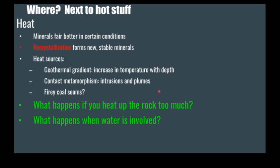Minerals, depending on the mineral, do much better in certain conditions than others. If you apply heat to those minerals, what will happen is the minerals might want to form new, more stable minerals that can handle those kind of heat conditions. This heat can come from the geothermal gradient, which is an increase in temperature with depth, common all over our planet. As you go down deep enough under the ground into the crust, you can get pretty hot, and that heat can in turn cause metamorphism.